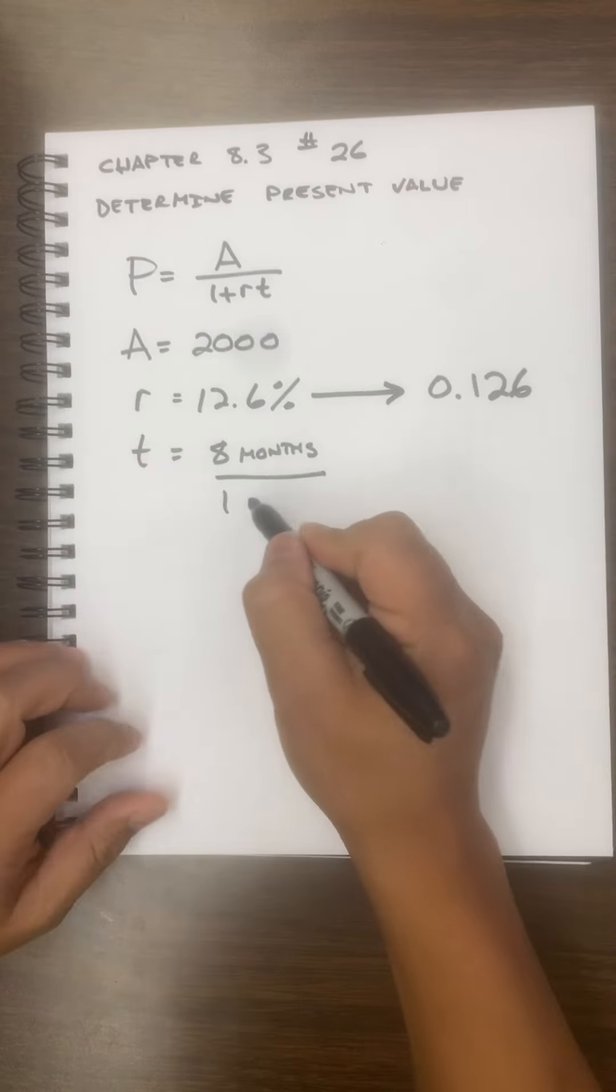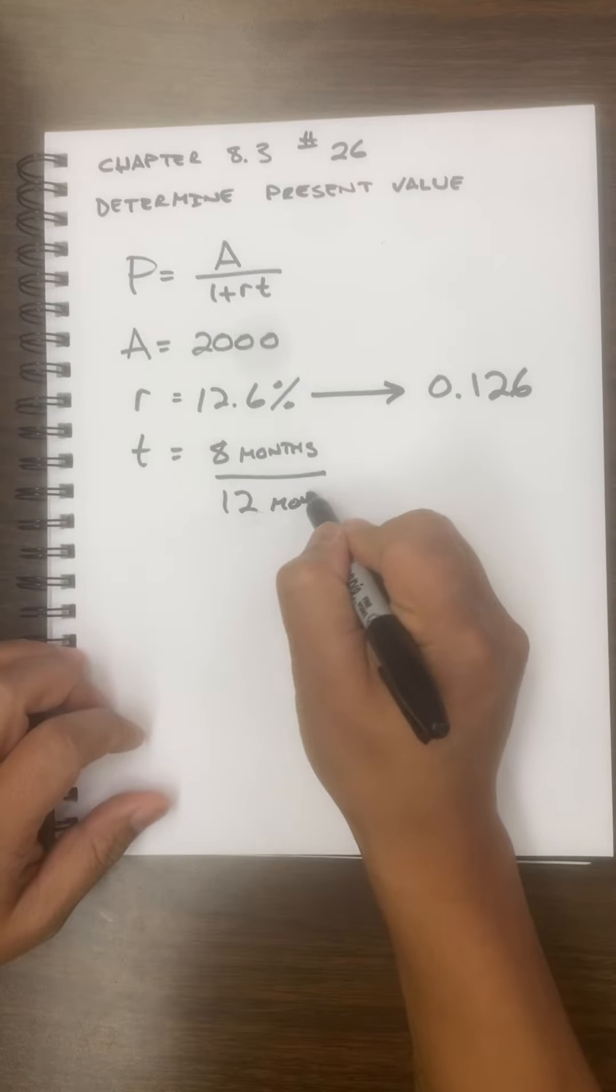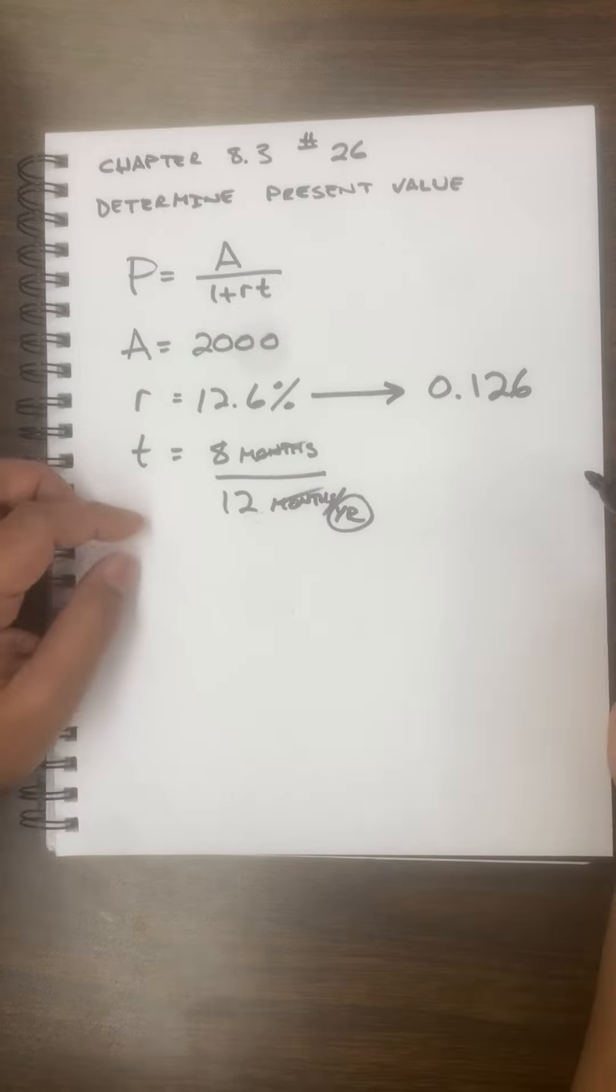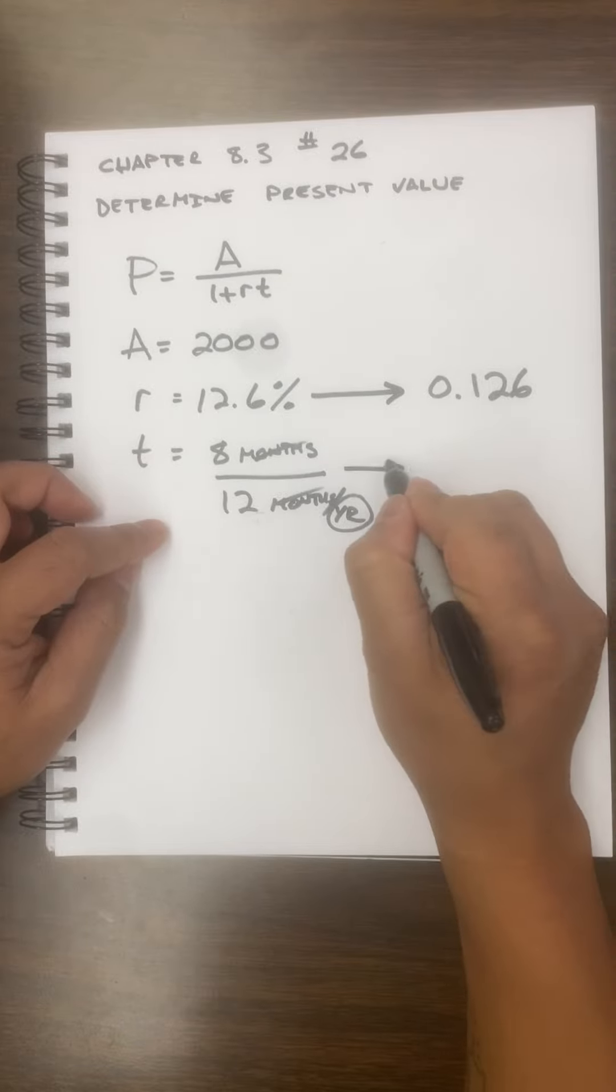by 12 months per year so that the months drop out and I get years. Eight divided by 12 is this crazy decimal that just keeps going forever.